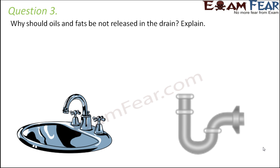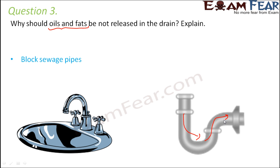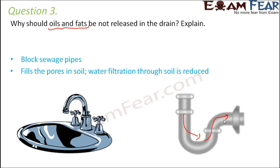Question three — why should oils and fats not be released into the drain? Oils and fats block drains and pipes, interrupting the smooth movement of wastewater and disrupting the entire sewage transport system. They also fill the tiny pores in the soil, preventing water from passing through it.